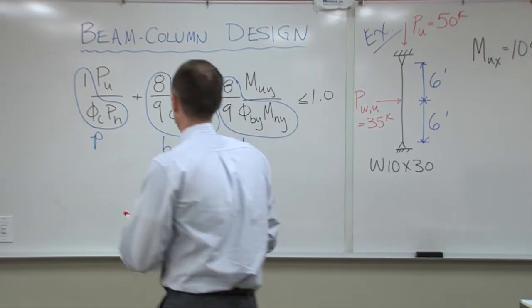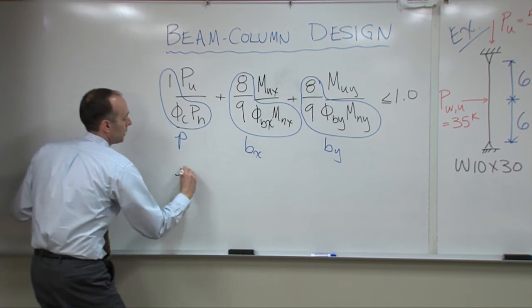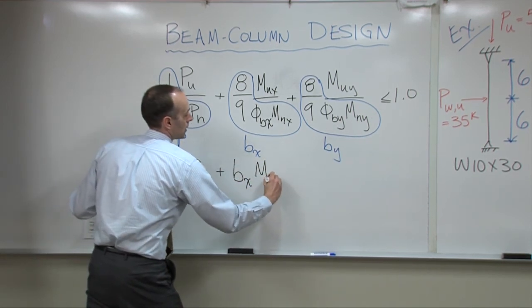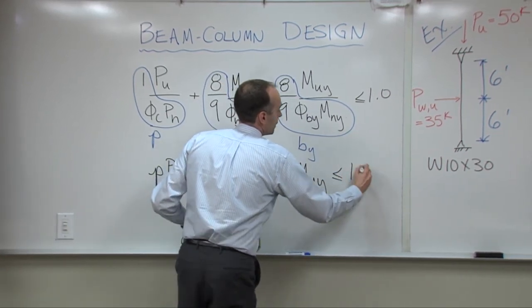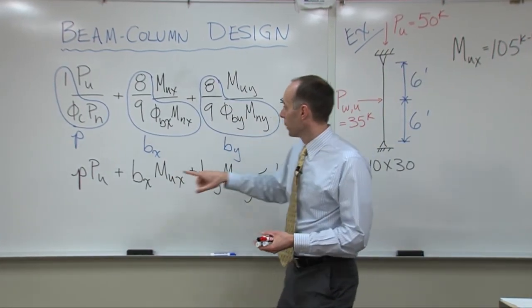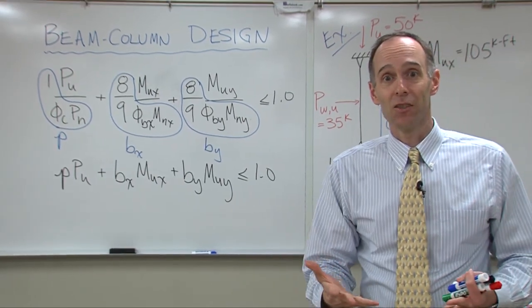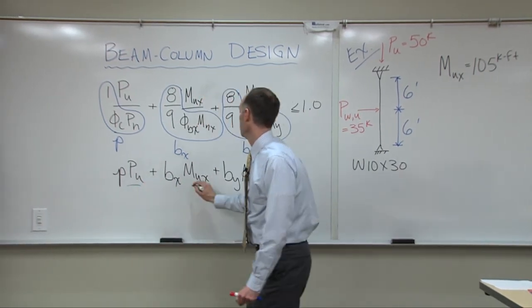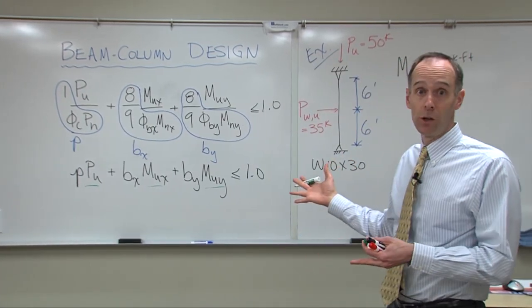With those definitions, the interaction equation becomes: p·PU + Bx·MUx + By·MUy ≤ 1.0. This simplifies things considerably. Each of these terms — p, Bx, and By — can all be determined for a section ahead of time, as long as you know the length. Then you just need to know the axial load and the moments about both axes, plug those in, and determine whether or not the section is adequate.